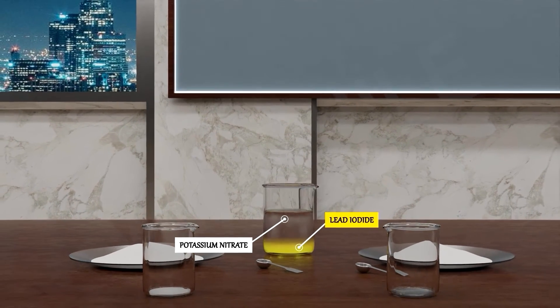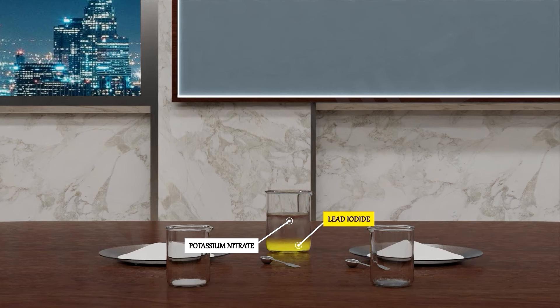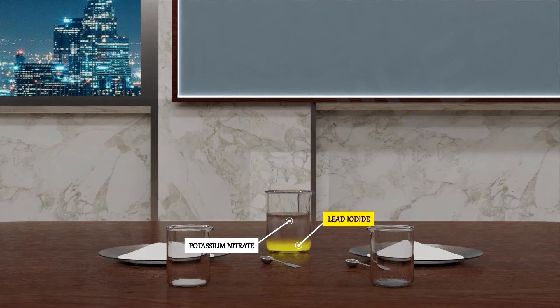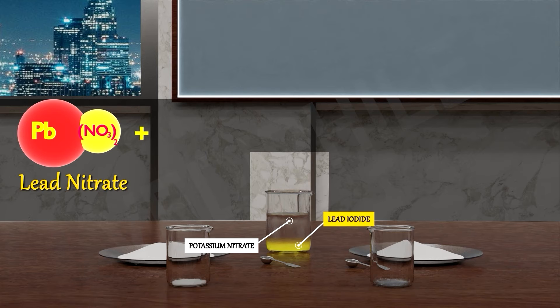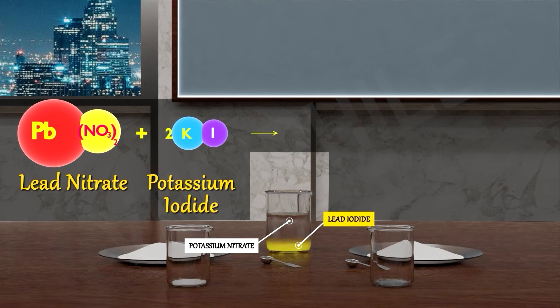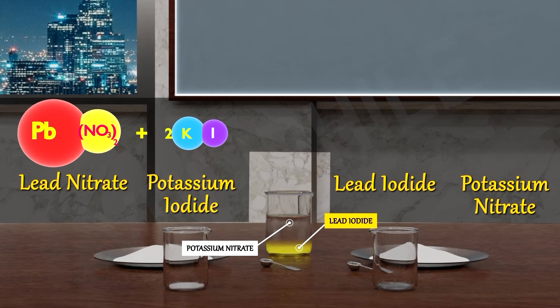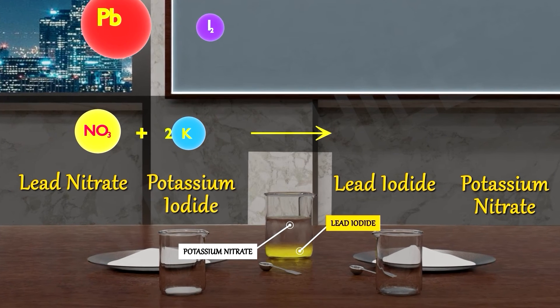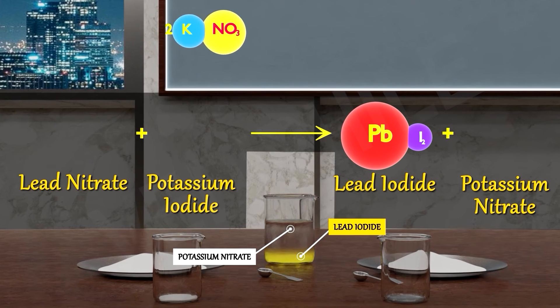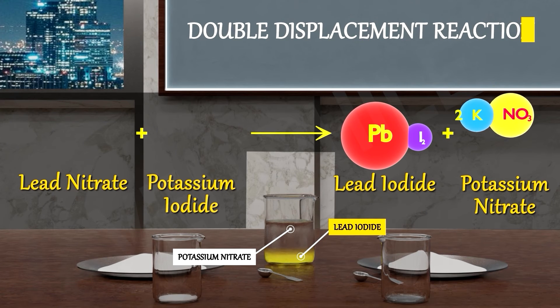Can you tell me what do we call this type of reaction? If we see the reaction, Pb(NO3)2 and 2KI means potassium iodide becomes PbI2 and 2KNO3. So here NO3 is replaced by iodide, and in 2KI, iodide is replaced by NO3. As we can see here, so it is a double displacement reaction.